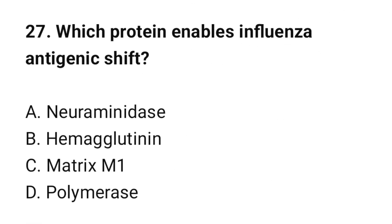Question number 27: Which protein enables influenza antigenic shift? The correct option is B: Hemagglutinin.